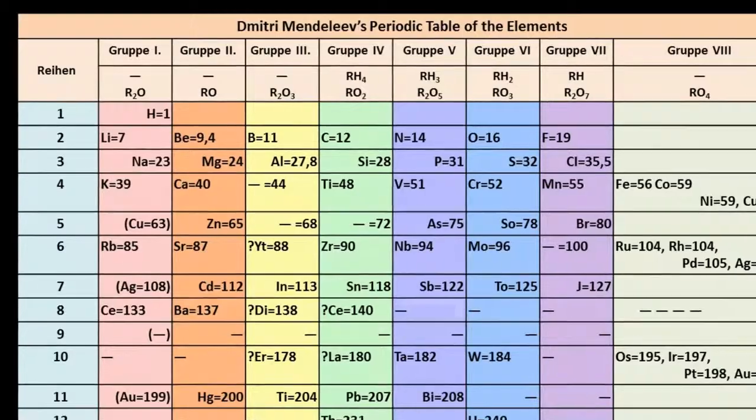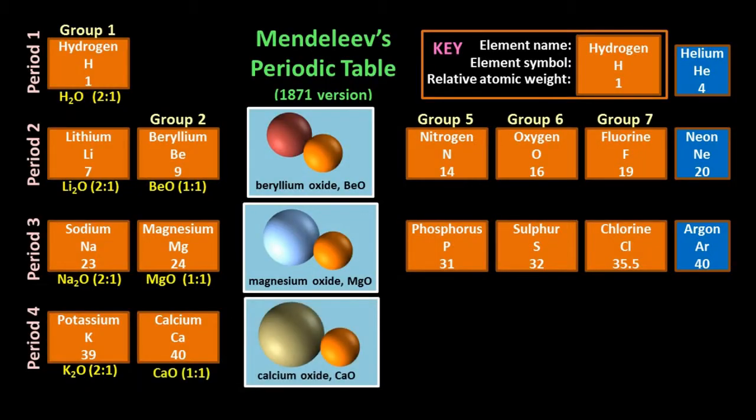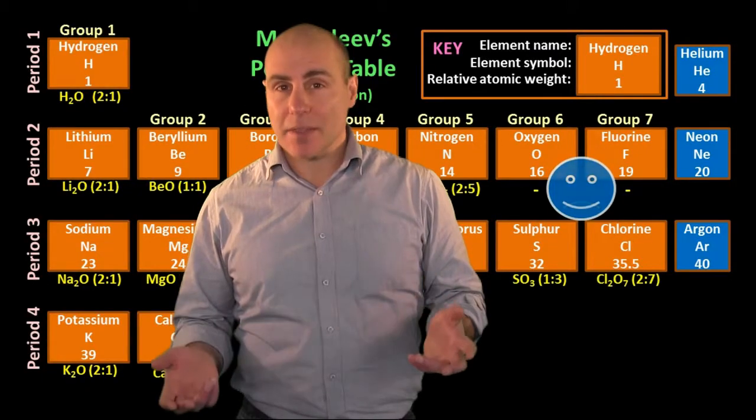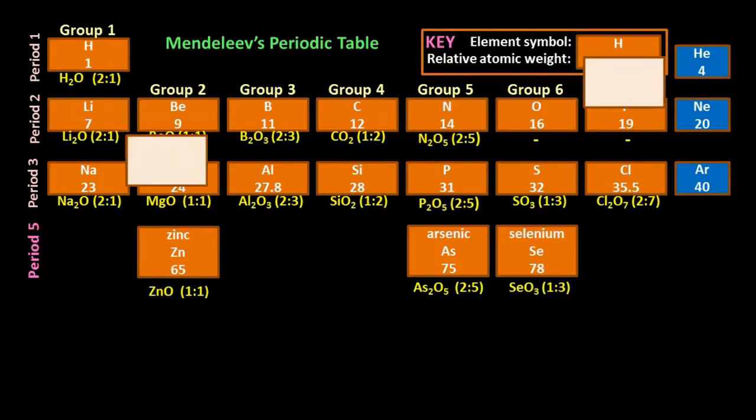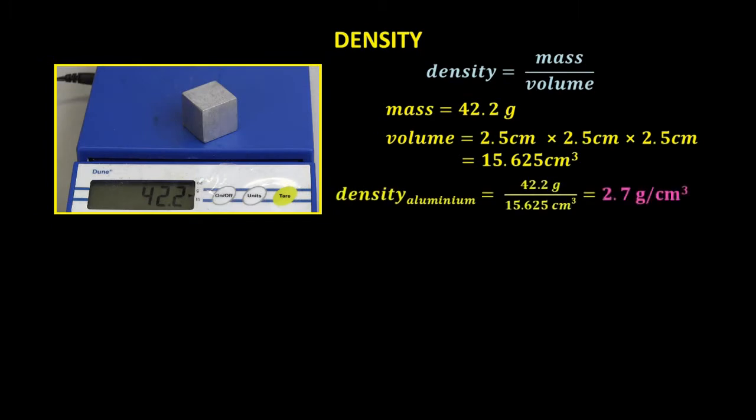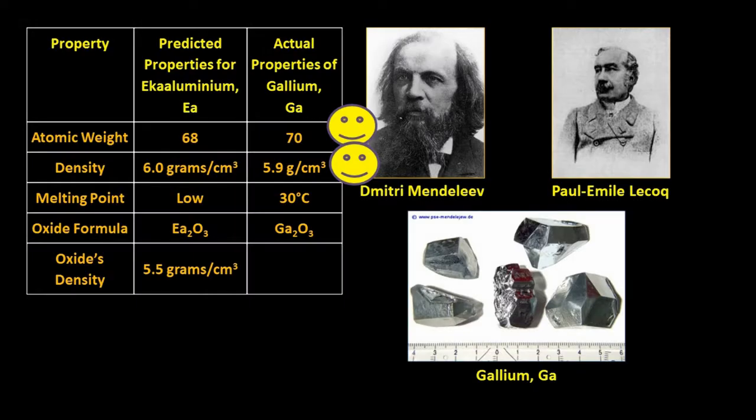We then explain how, in the late 1860s, Dmitry Mendeleev devised the first periodic table, which organised the then known elements into groups, based on how they behave chemically. We finish by describing how he was able to predict, not just the existence of many elements that hadn't been discovered, but also many of their properties as well. Thanks for watching.